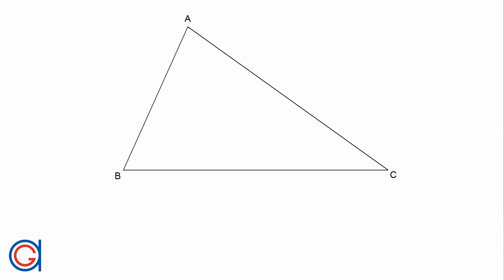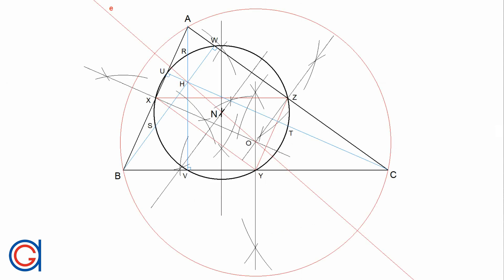Hello, today we are going to learn how to draw the nine-point center circle of any given triangle. The nine-point center N is the center of the nine-point circle of any given triangle ABC, which passes through the following nine points associated with the triangle.